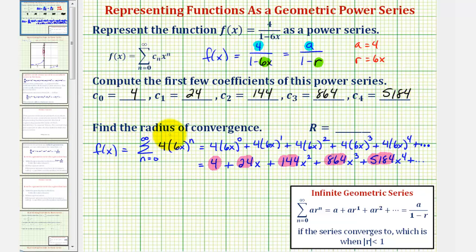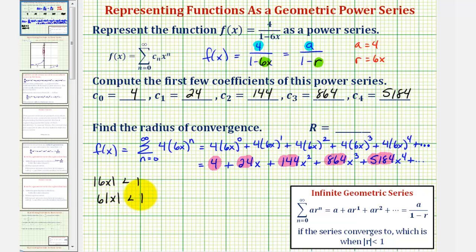To find the radius of convergence, recall that this infinite geometric series only converges when the absolute value of r is less than one. In our case, this means the absolute value of 6x must be less than one. Since the absolute value of 6 is 6, we have 6 times the absolute value of x less than one, so dividing both sides by 6, the absolute value of x must be less than one-sixth. Therefore the radius of convergence is one-sixth.